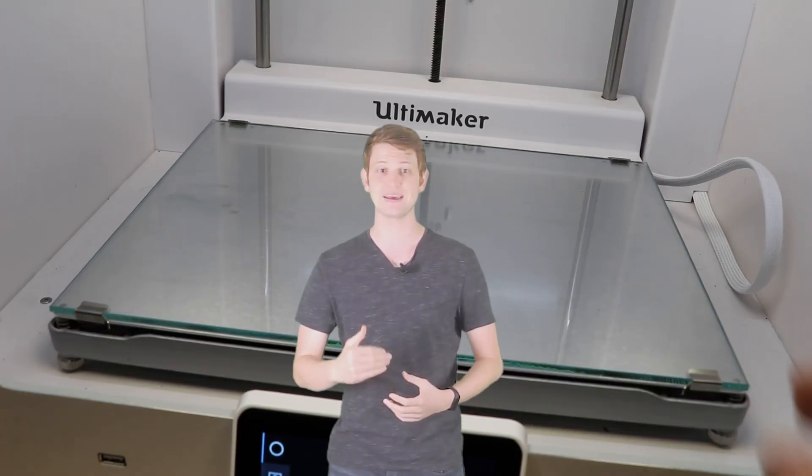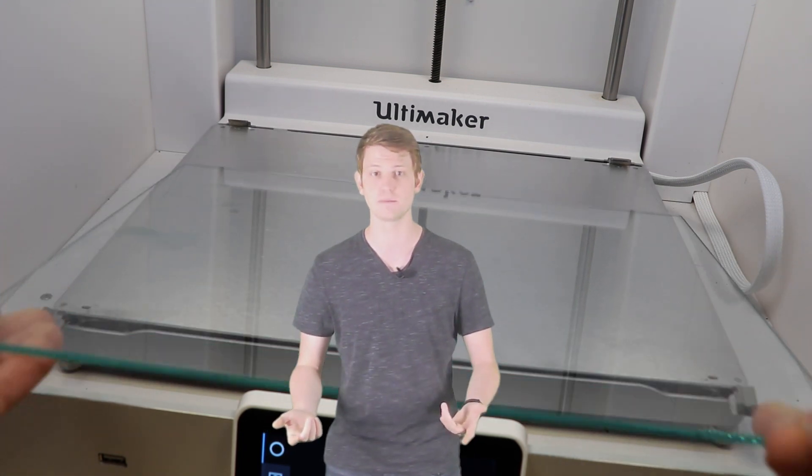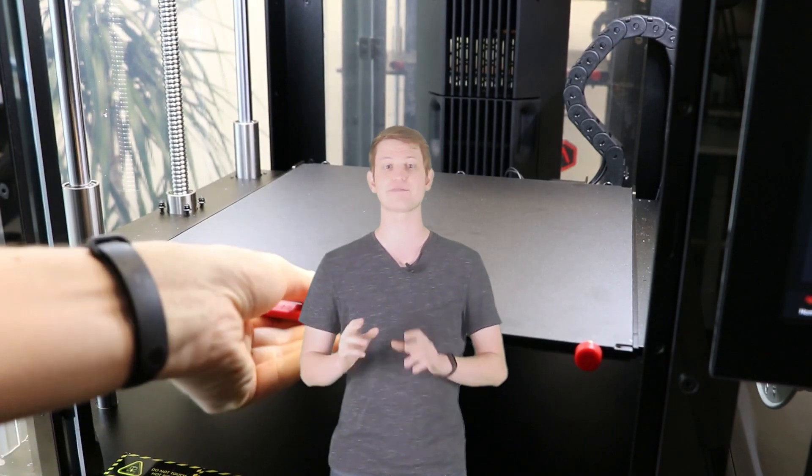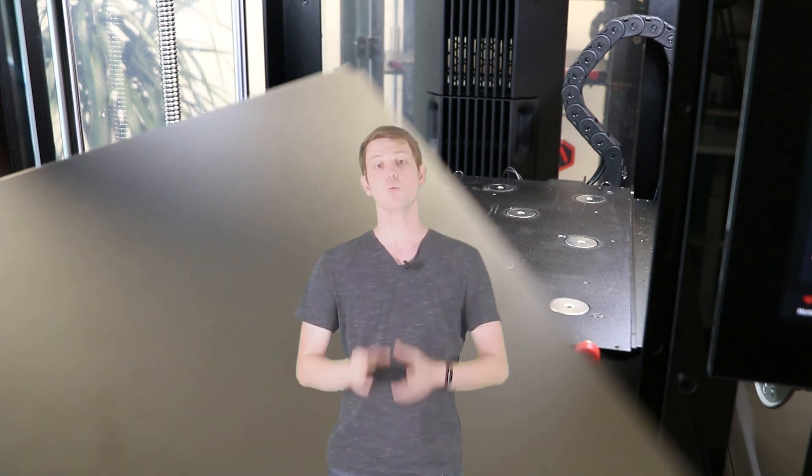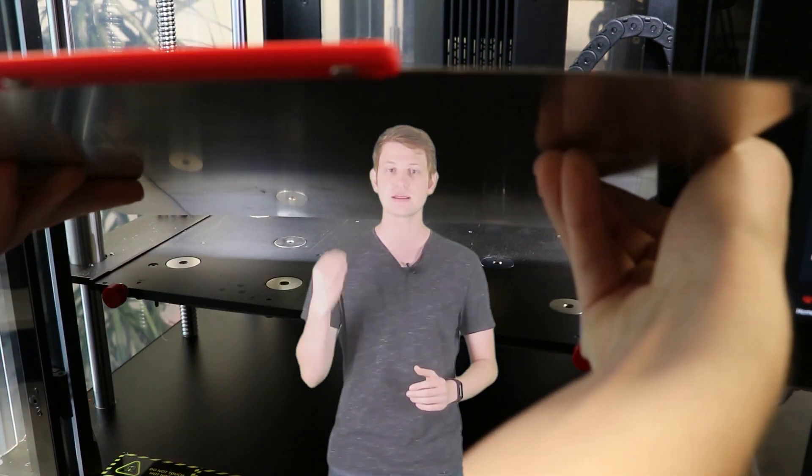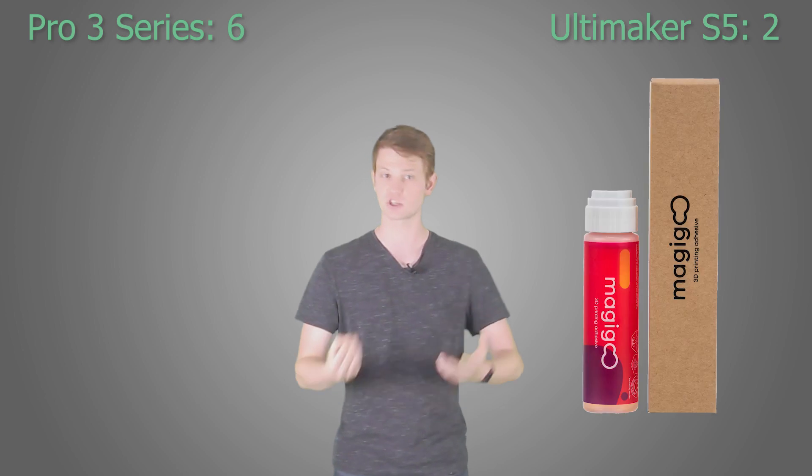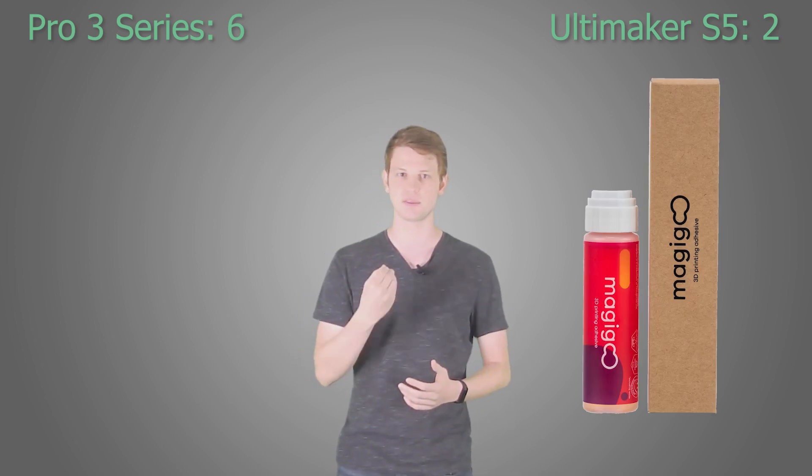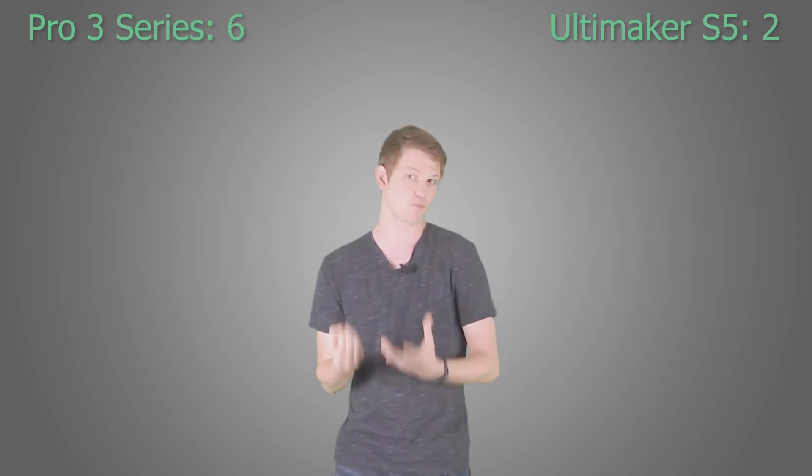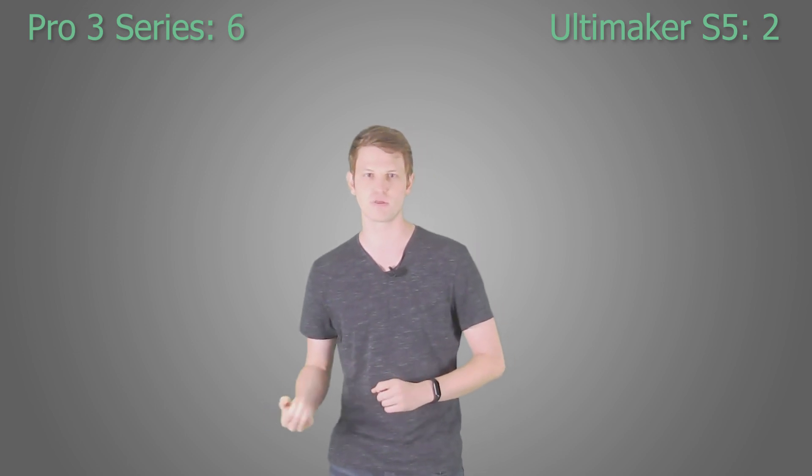As for the build plates available, the Ultimaker S5 is equipped with a glass plate held in place by two clips in the front of the machine. The Pro 3 series comes with a flexible steel plate with BuildTak applied. While the BuildTak surface has to be replaced eventually, it eliminates the need for adhesives such as Magigoo, which are commonly used with a glass plate on the S5. The flexibility of the steel plate allows for easy removal of a printed part. There will also be the option to purchase a glass build plate for the Pro 3 series as an add-on. This increased flexibility in choosing the right build plate for your specific application means the Pro 3 series gets another point from me.